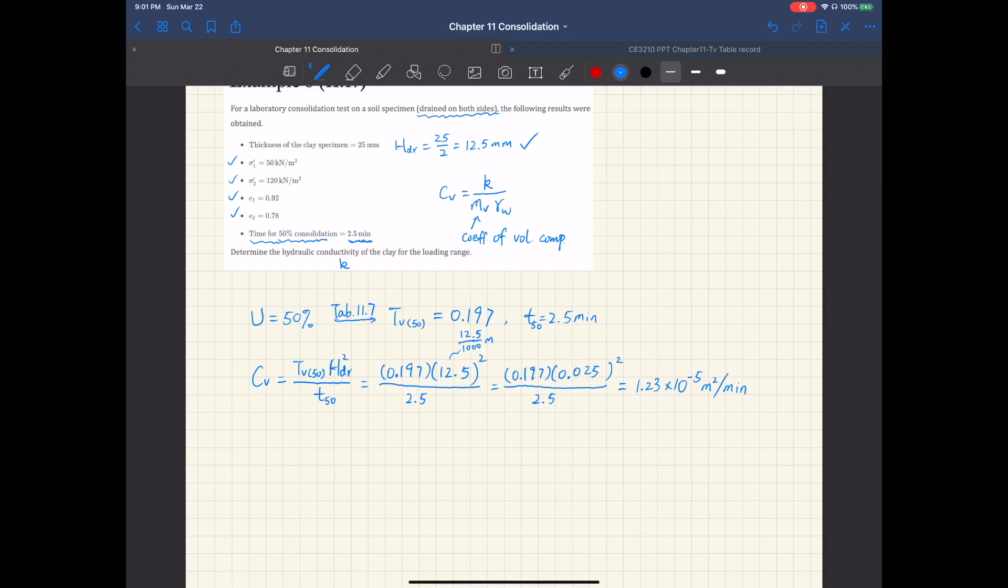To get k we also need the coefficient of volume compressibility mv. So mv is the coefficient of compressibility a sub v divided by 1 plus eav. And the a sub v is, just as what we did in Example 7, delta e over delta sigma prime divided by 1 plus eav.